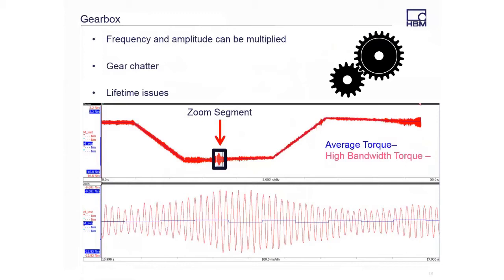I mentioned a gearbox — this is an example of a little dyno rig we have in my office where we have a permanent magnet machine going into a gearbox. I recorded a ramp of torque and speed for a period of time, about 30 to 40 seconds. In red I have my instantaneous torque, and in blue I have a time-averaged torque. I ramped around until I found a particularly high ripple point. Just looking at the top graph, it's easy to think that the red is just noise, but if we zoom in on that high ripple segment, we can see in the bottom screen that that's not noise — there is frequency and amplitude to that torque signature oscillating around the average.